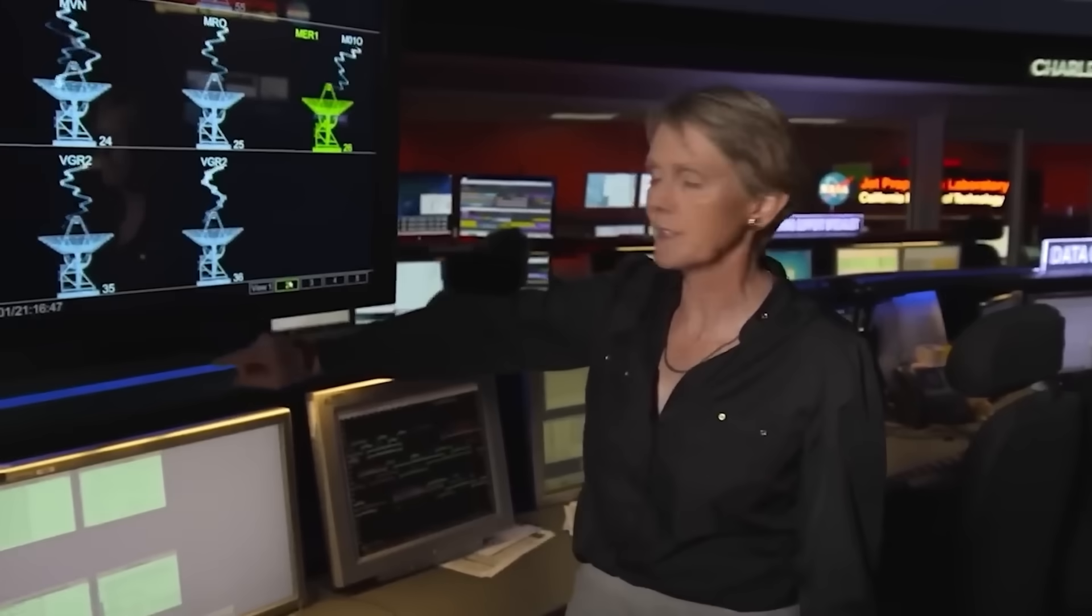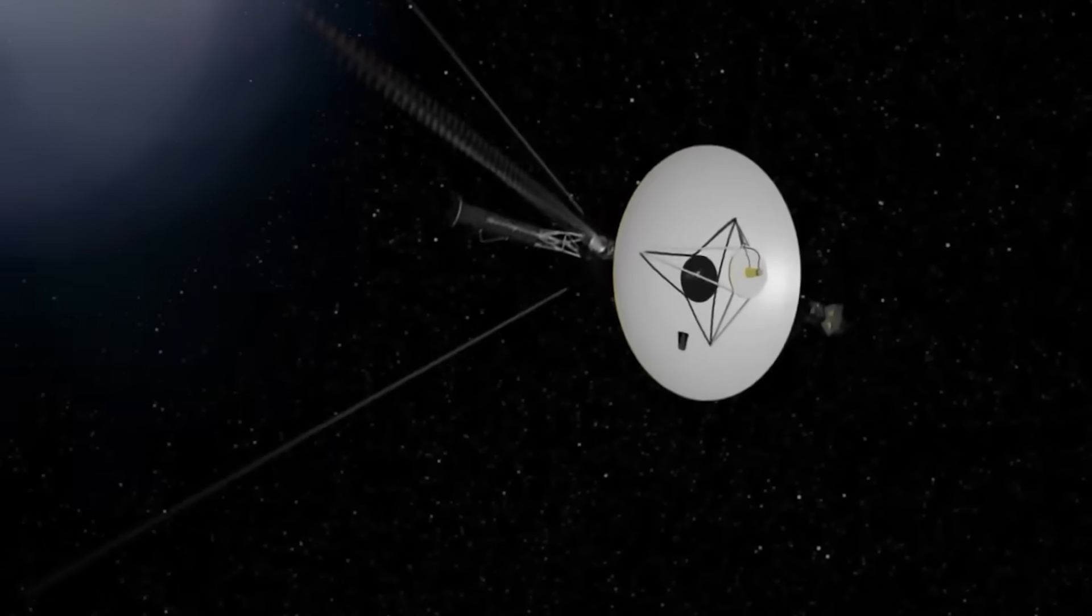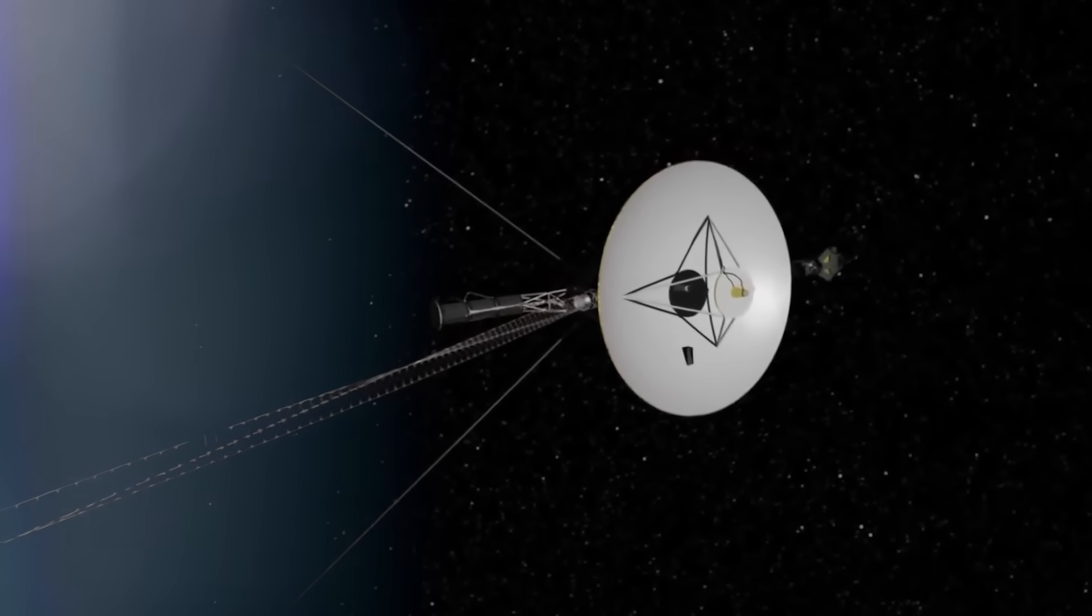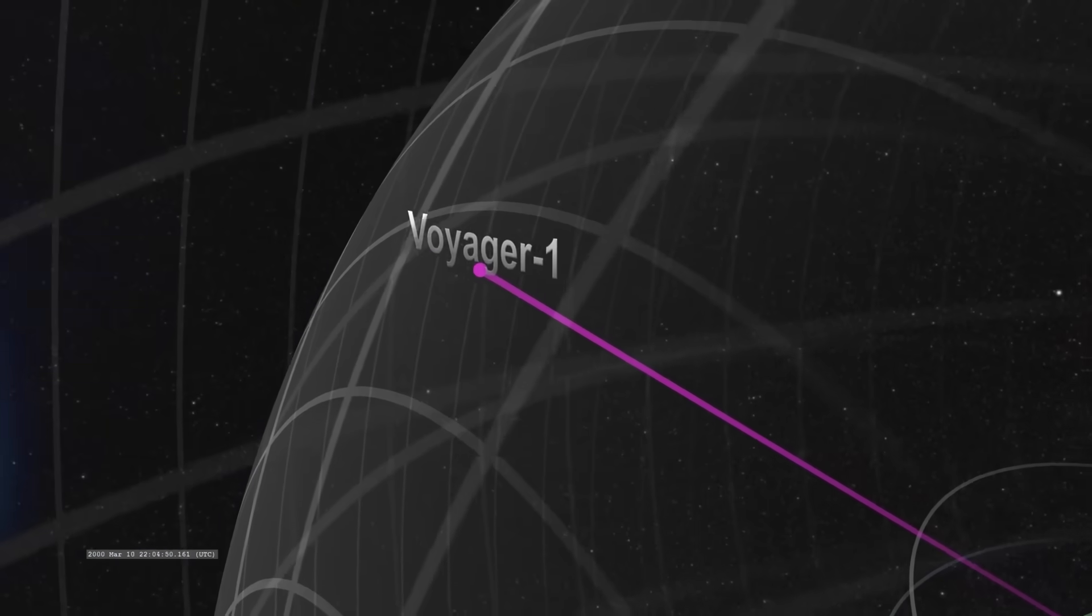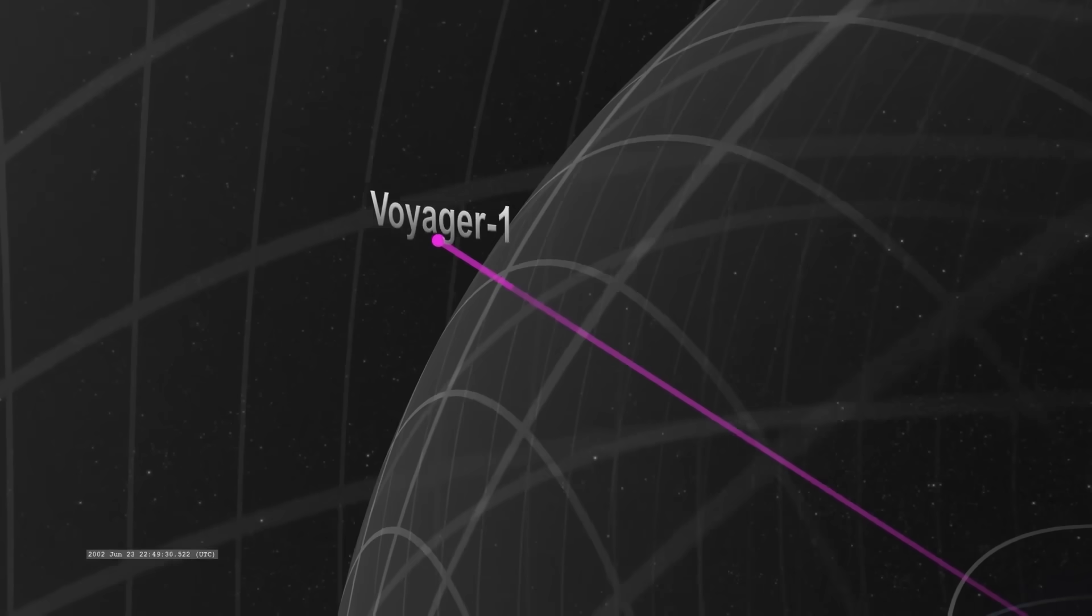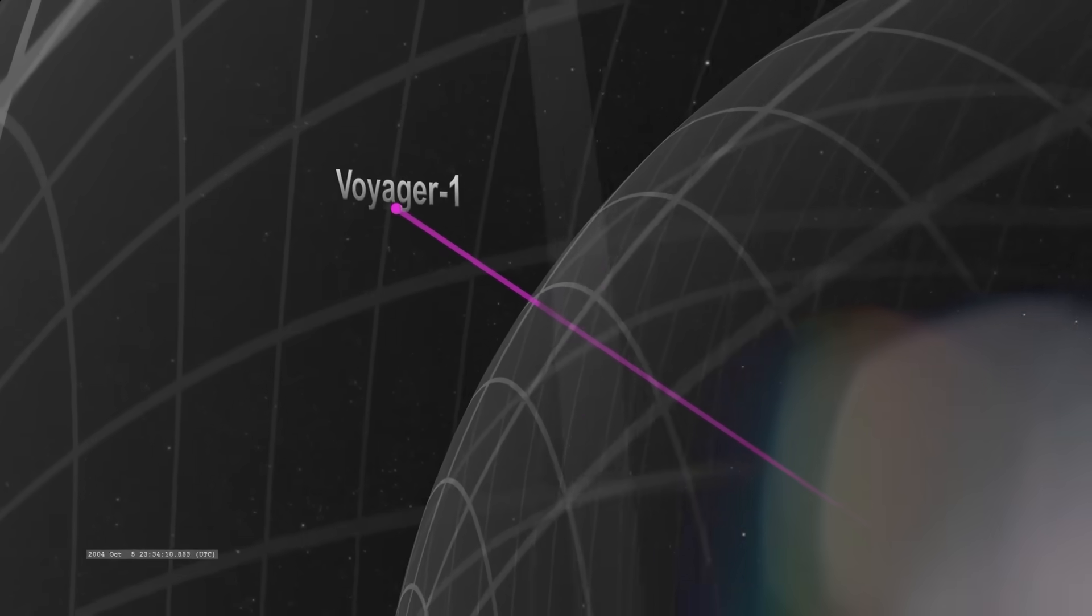A moment so profound it forced NASA to revisit its own models. A signal so strange that top engineers are debating whether Voyager is observing something, or being observed. Tonight, we unravel the terrifyingly beautiful mystery that just emerged from the edge of interstellar space.